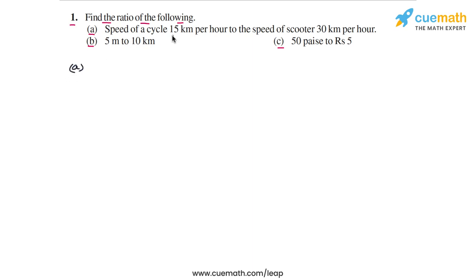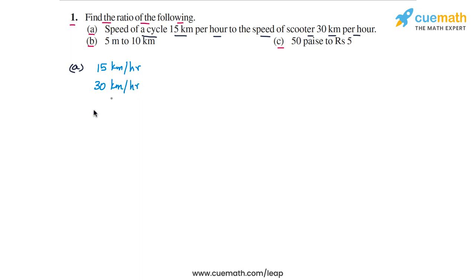In part A, we have to find the ratio of the speed of a cycle — 15 kilometers per hour — to the speed of a scooter — 30 kilometers per hour. So the first speed is 15 kilometers per hour and the second speed is 30 kilometers per hour. We have to find the ratio of these two quantities.